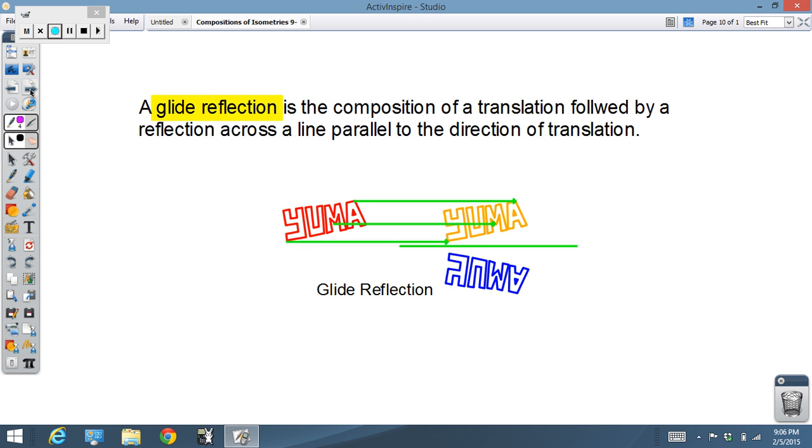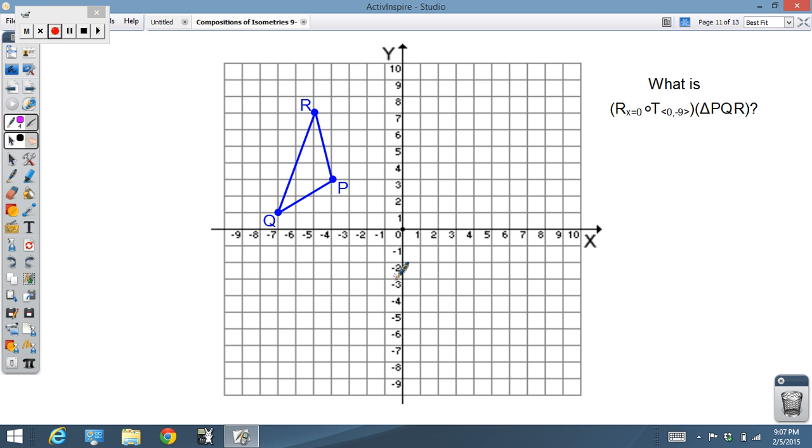Now, finally, a glide reflection, our fourth different kind of isometry. Again, we're going to take our original figure. We're going to translate it in a certain direction. And then we're going to do a reflection over a line. And now, notice that our line of reflection has to be parallel to the direction of the motion. So, that's a glide reflection. And we're going to leave this up to you. What is this transformation going to look like?